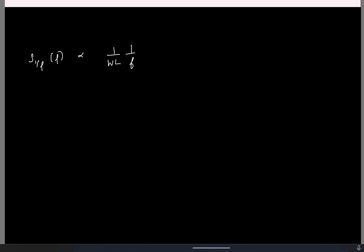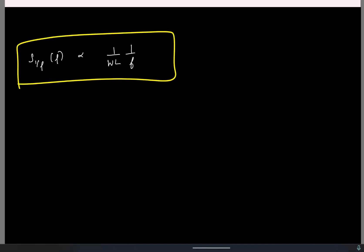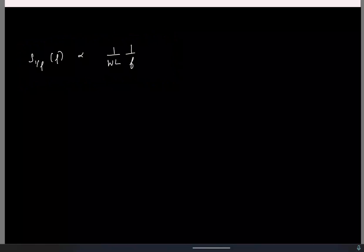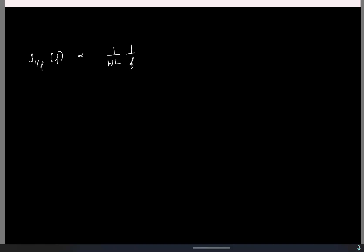Let us say you have designed some amplifier and you find that it has some noise due to flicker noise. If you want to reduce the effect of it, what is the brute force way in which you can reduce it? You increase the area. So, if we increase area the flicker noise also reduces.